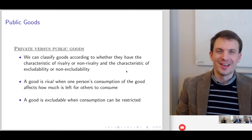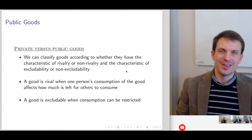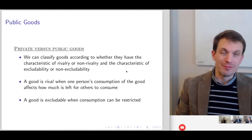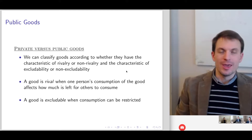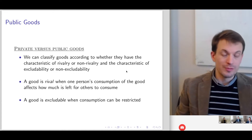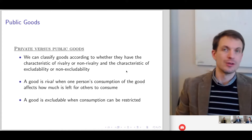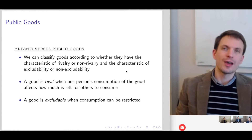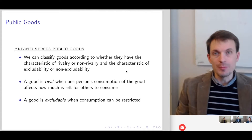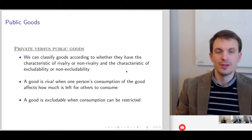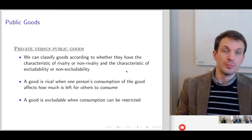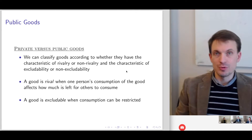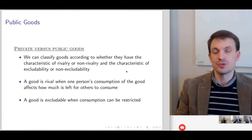We classify goods according to whether or not they have the property of rivalry. A good that doesn't have the property of rivalry will have the property of non-rivalry. And we can classify goods according to if they have the property of excludability or non-excludability. A good is rival if one person's consumption of that good will diminish how much exists for other people. A good is excludable when consumption can be restricted, for instance, to paying customers.